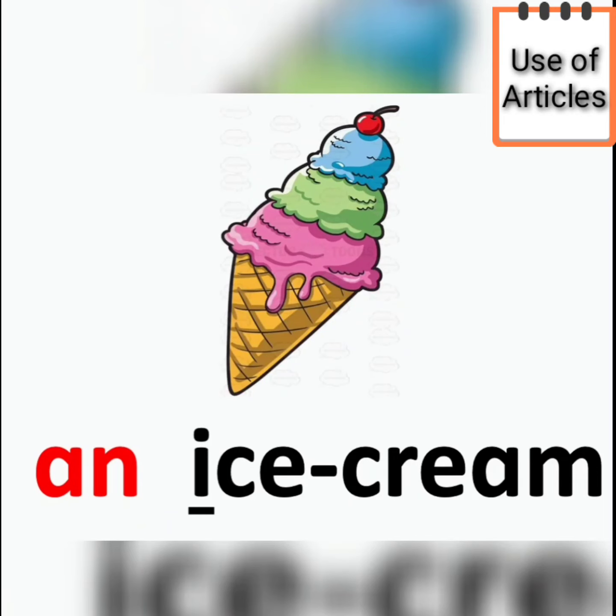an ice cream. It is starting with vowel I. And vowel's friend is an. So, we will say an ice cream.